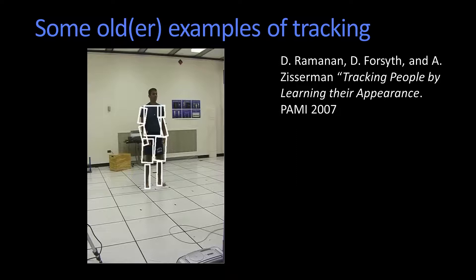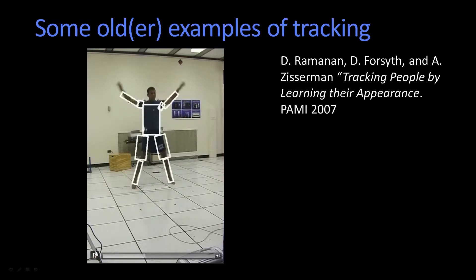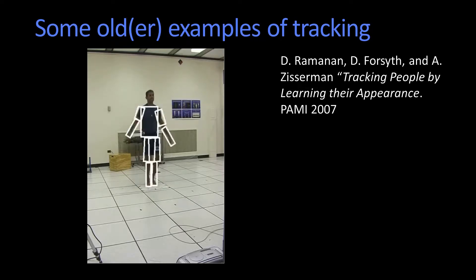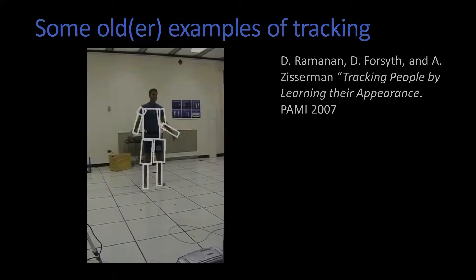Here's a slightly more recent one. This is a tracking of body parts as somebody's moving. You can see the reference there. Again, this is a tracking problem, but it's tracking with a model — the idea is to be able to track where the parts have moved.